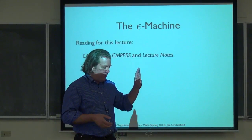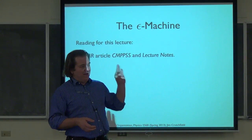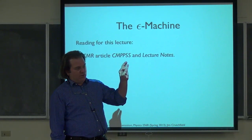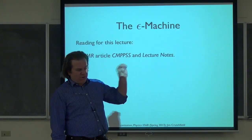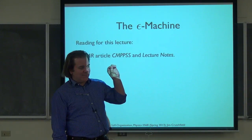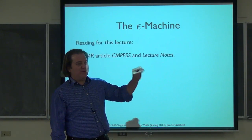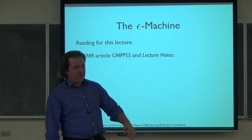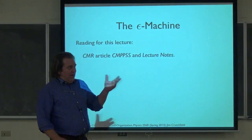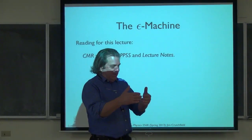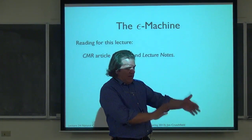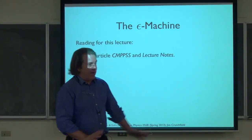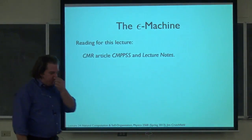I went back and fixed the topological reconstruction for the golden mean process — the slides were wrong. I just at the last minute copied the wrong machine over; it made no sense, but it's now corrected. The online lecture will have the wrong slides, but the PDF and the HTML for the slides are now corrected, so you can step through that.